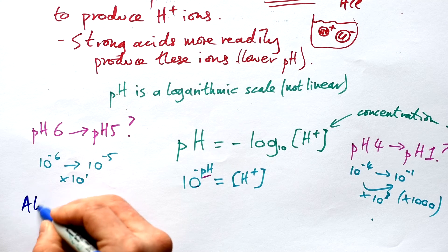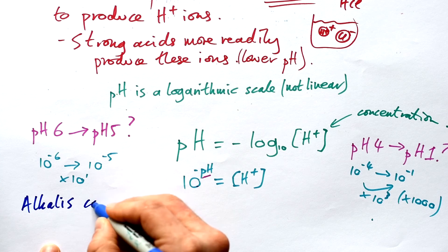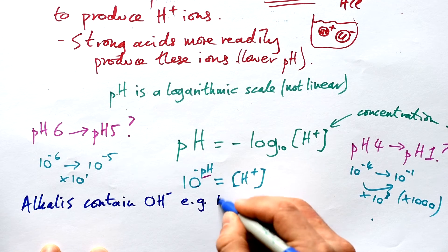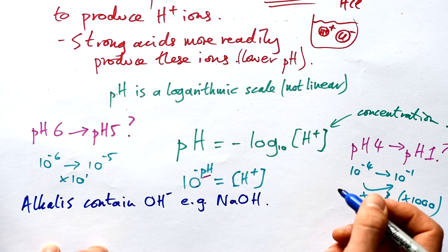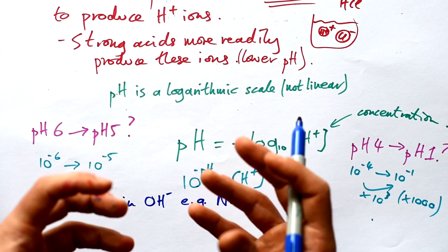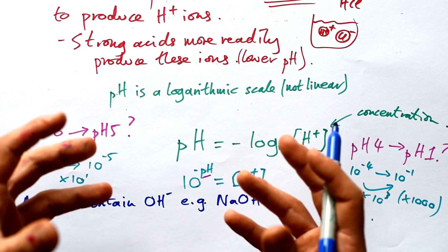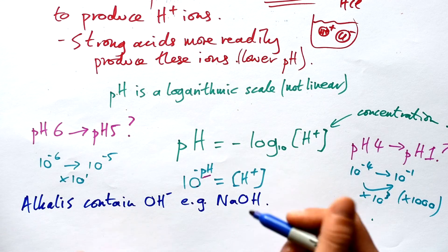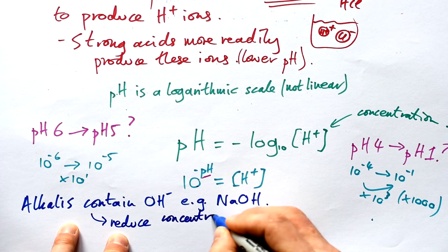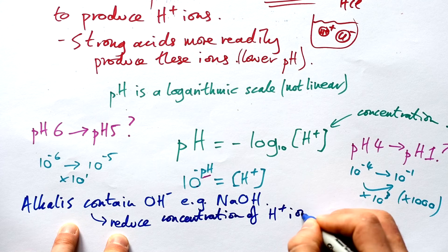Alkalis or bases usually contain an OH- ion, like sodium hydroxide. Now because of this OH ion, hydrogen ions are attracted to those OH ions. H and OH, that makes water effectively. So these will actually reduce the concentration of H+ ions in a solution.